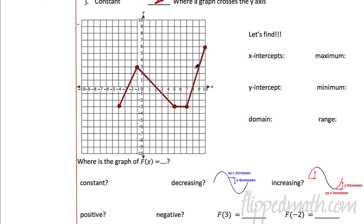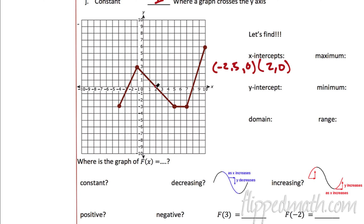Let's start getting into it. I'm going to go through these quickly, so if you need to pause the video or go back, make sure you pause and re-listen, or ask your teacher. The x-intercepts — that's where it crosses the x-axis. We can see that occurs at about negative two and a half, then at two (so I'm writing it as the point (2, 0)), and then at eight. So those are our x-intercepts.